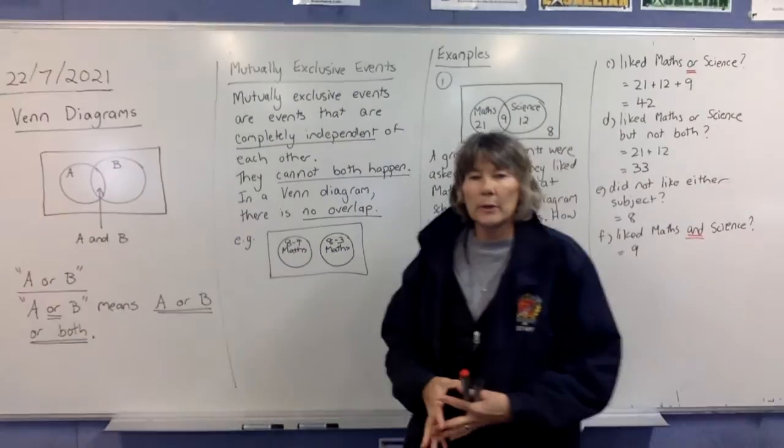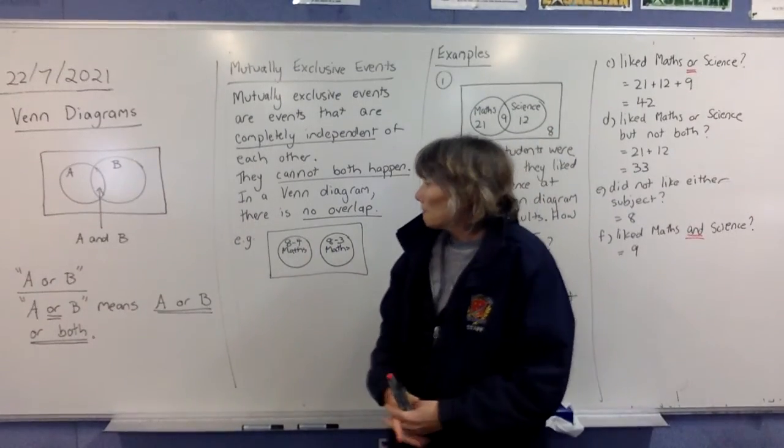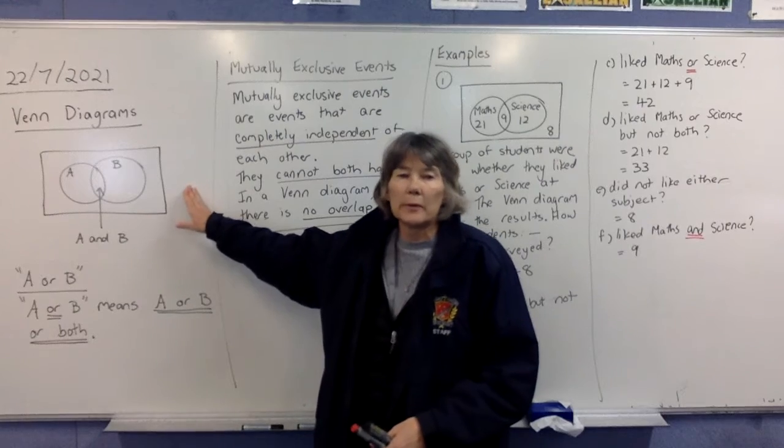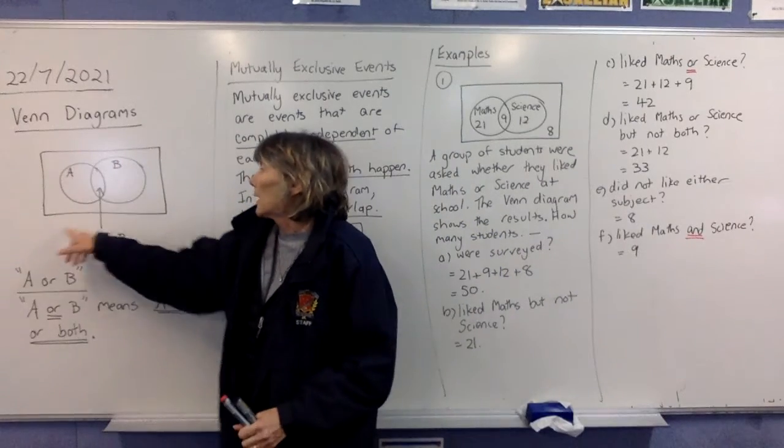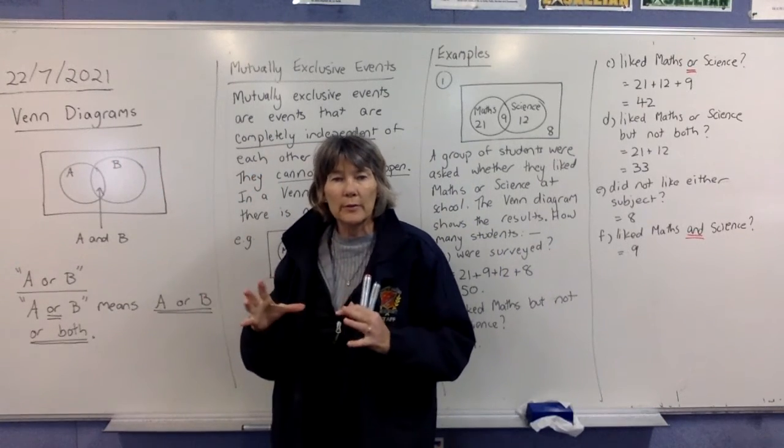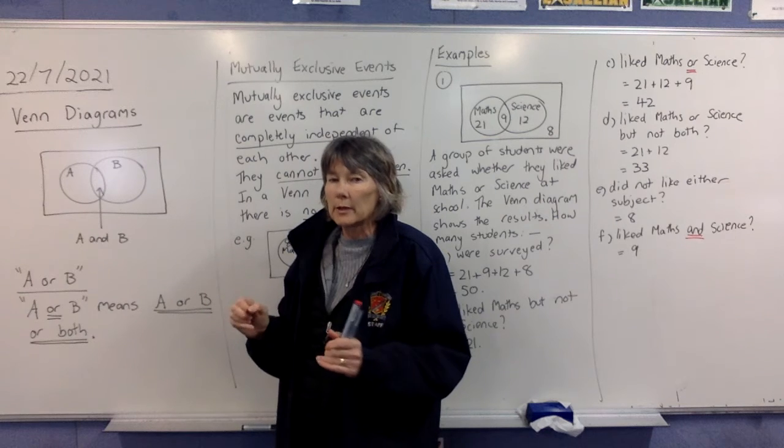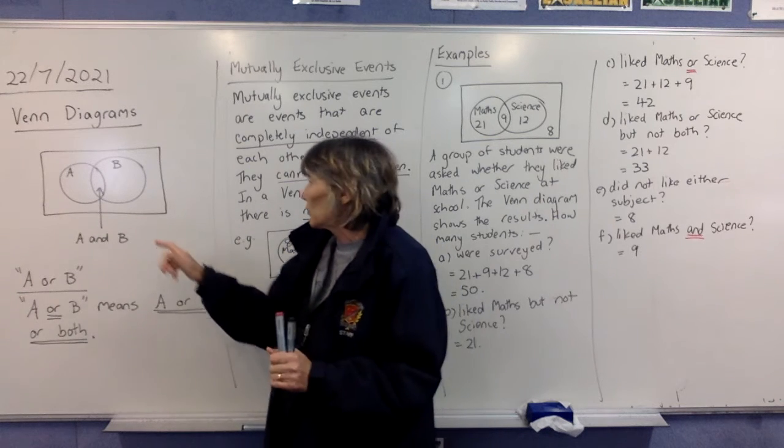All right boys, so today we're doing Venn diagrams. This is really what a Venn diagram looks like. You've got a rectangle, inside it you have circles. At this stage we're only probably going to be doing two circles.